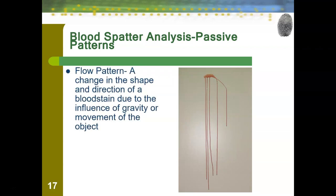Then we have our flow pattern. A flow pattern is a change in shape and direction of a bloodstain due to the influence of gravity or movement of the object. We often see flow patterns when blood either hits a wall and then flows down, or in car accidents as people hit the brakes — hence the movement of the object part.